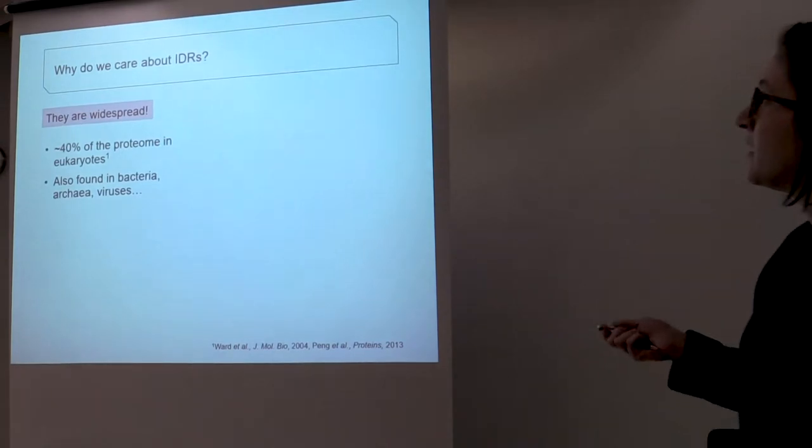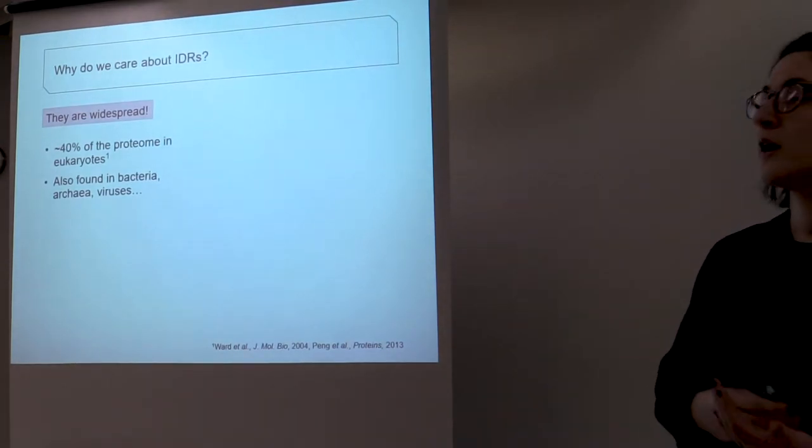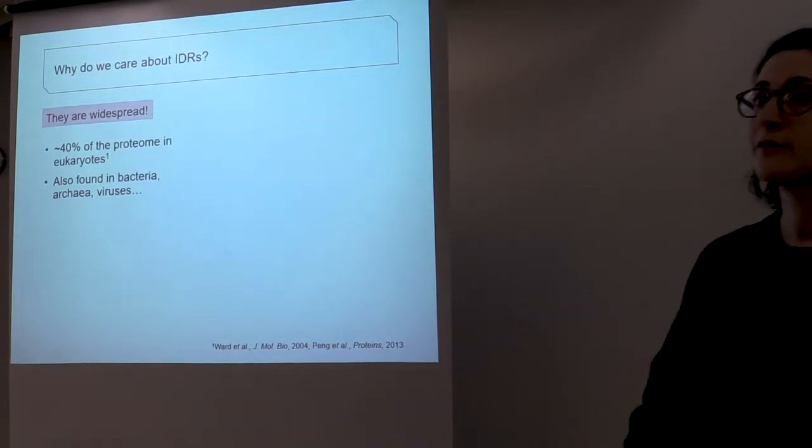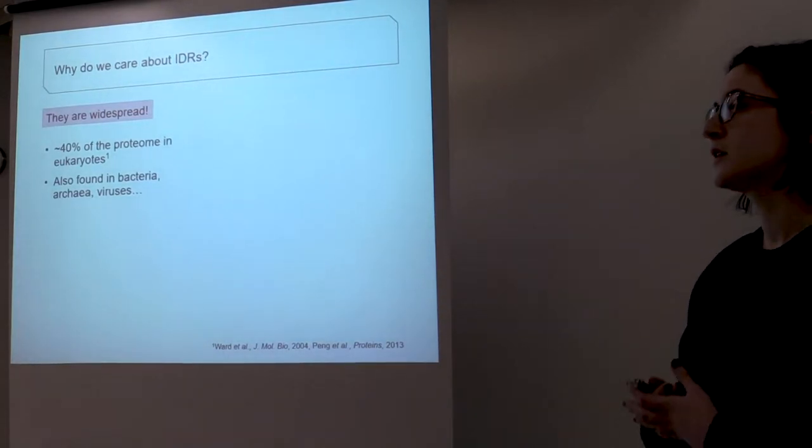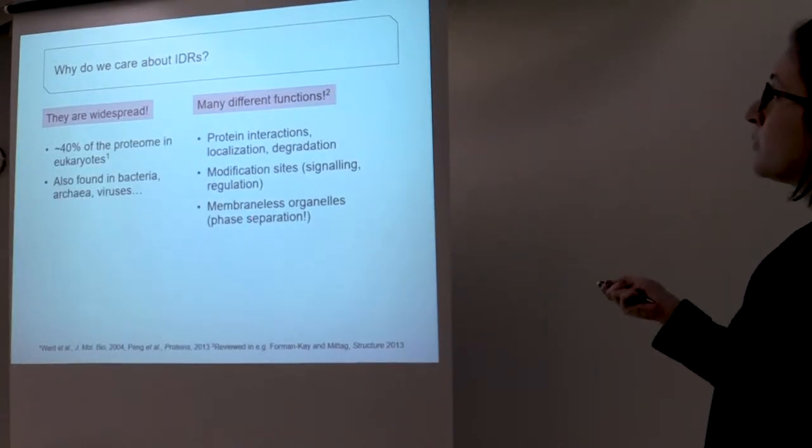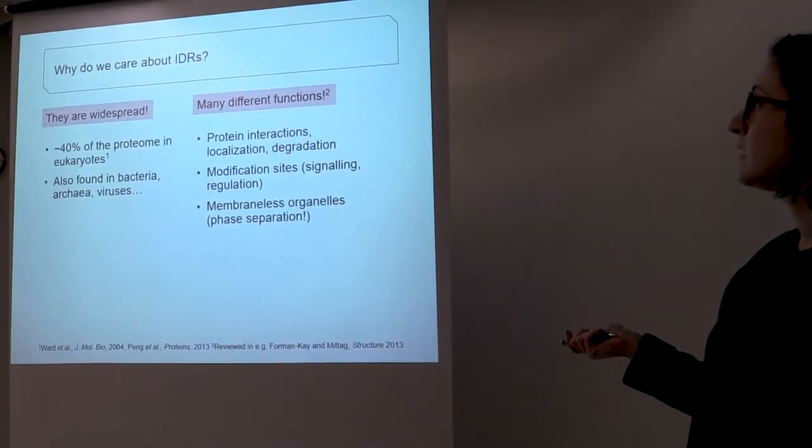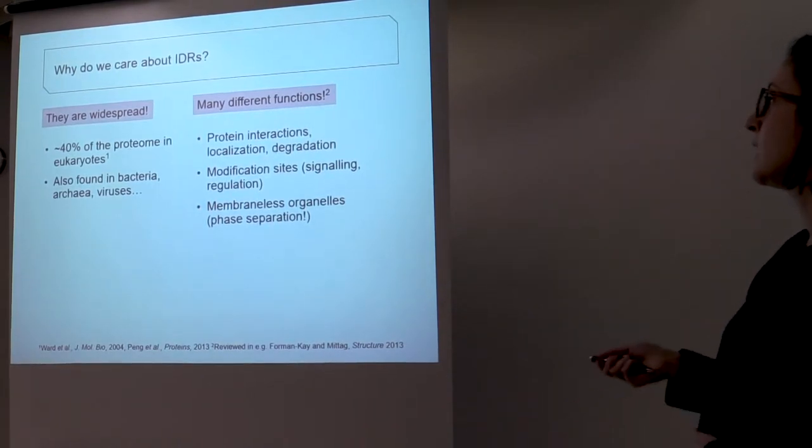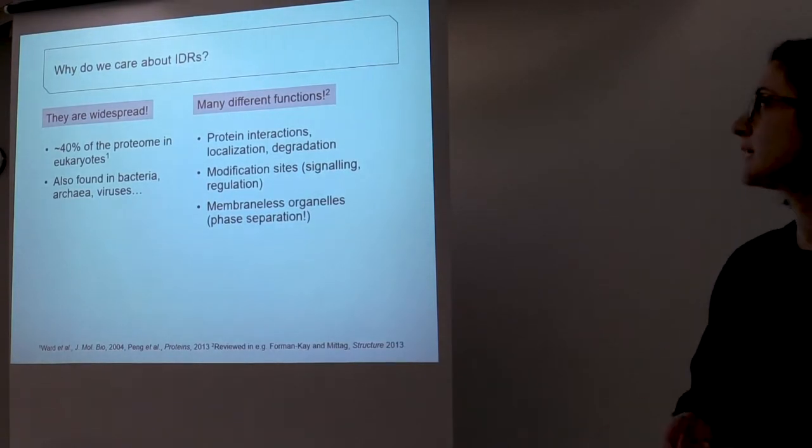So why do we care about these disordered regions or IDRs? First of all, they're widespread. Close to half of the proteome in eukaryotes is comprised of these regions. They perform many different functions in the cell, which are listed here, so protein interactions and they're rich in modification sites.